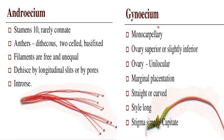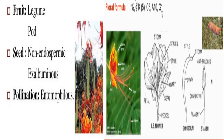Anthers are introrse, meaning inward facing. Gynoecium: monocarpellary, ovary superior — slightly inferior. Ovary unilocular with marginal placentation. Ovary straight or curved. Style long. Stigma simple or capitate. Fruit is a legume or pod. Seed is non-endospermic, i.e., exalbuminous. Pollination is through entomophily.